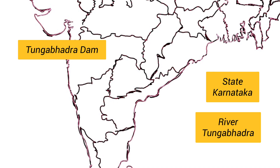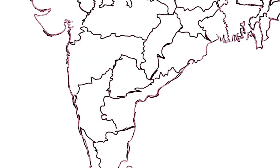The next dam is Tungabhadra Dam. It is built on the river Tungabhadra. It is located in the state of Karnataka.